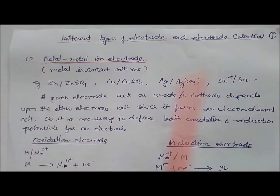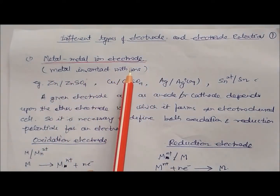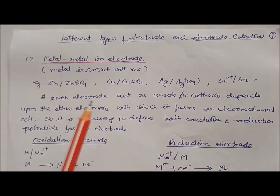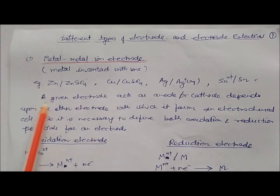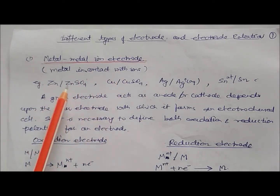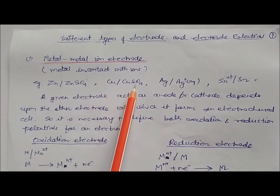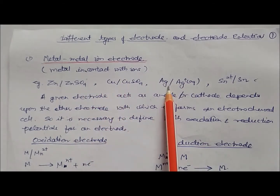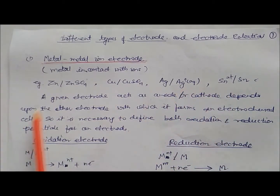In this section we will see the different types of electrodes. Number one is metal-metal ion electrodes. We have already seen how zinc is dipped in zinc sulfate solution, where the metal is in contact with its own ions. Similarly, copper is in contact with its own ions, silver with silver ions, and tin with tin ions.